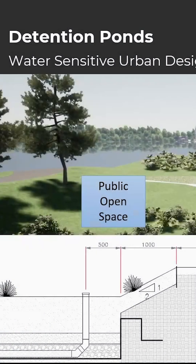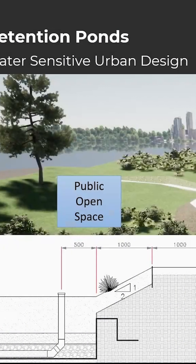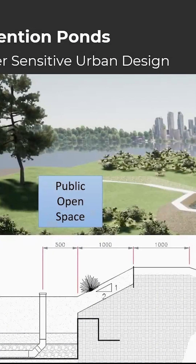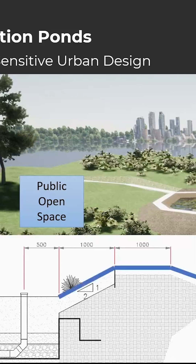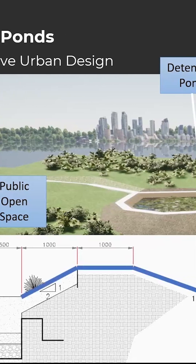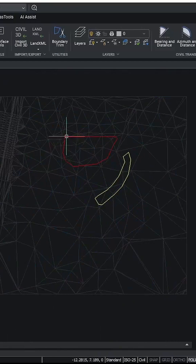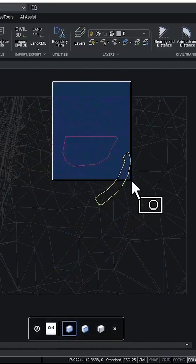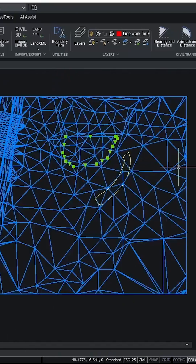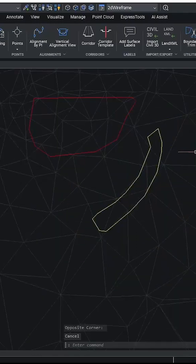The typical cross-section we're working with through the main detention pond is shown here, and the part we're concerned with is this area in blue. We have a tin surface here, and we have the polylines — the red one represents our main pond, and the yellow one is our swale.